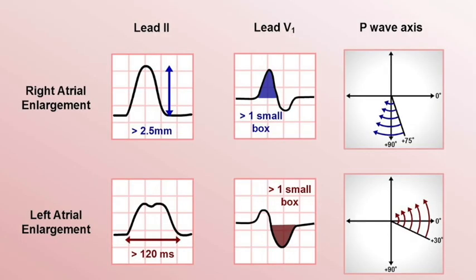Step four: evaluate P waves and PR interval. Look at leads two and V1 for P wave morphology. For sinus rhythm, P waves are positive and upright in leads one, two, and AVF; negative in AVR; each P wave is followed by a QRS complex. Normal PR interval is 120 to 200 milliseconds (three to five small boxes). Evaluate for prolonged PR (greater than 0.20s) or shortened PR (under 0.12s).